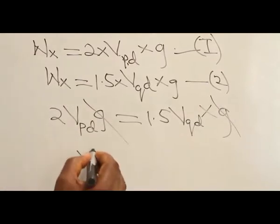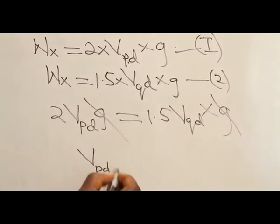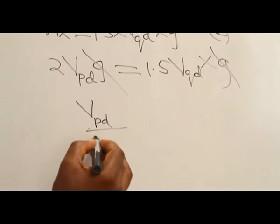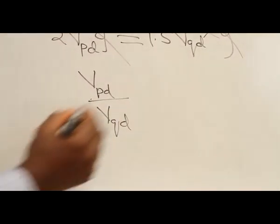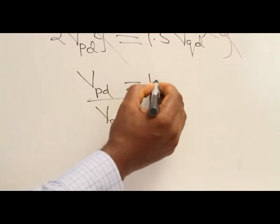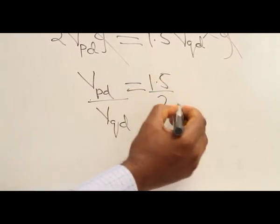So, if we compare the volume of P displaced with the volume of Q displaced, we are going to get 1.5 over 2.